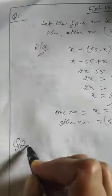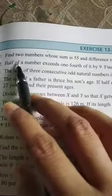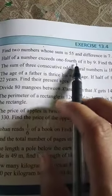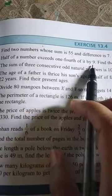Add them: 31 plus 24 is equal to 55. Now question number 2: half of a number exceeds one-fourth of it by 9.